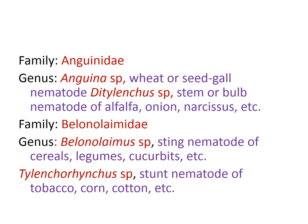The first family of economic importance is Anguinidae. The nematodes belong to the genus Anguina. The important species is Anguina tritici, which is the seed gall nematode. The stem or bulb nematodes belong to the Ditylenchus species — Ditylenchus dipsaci and Ditylenchus destructor are the important nematodes in the Ditylenchus genus.